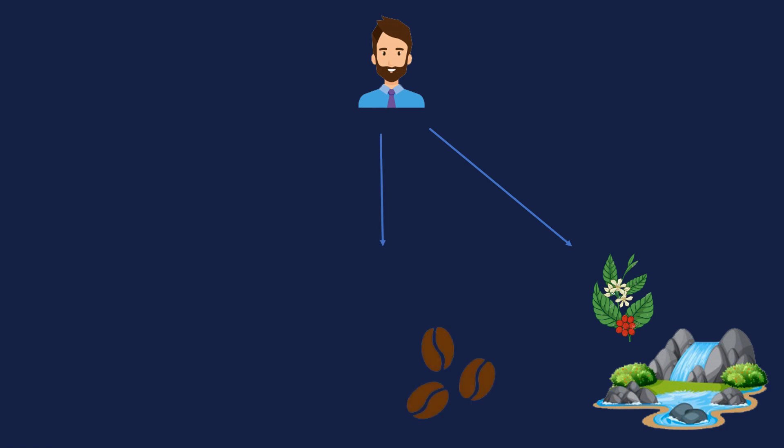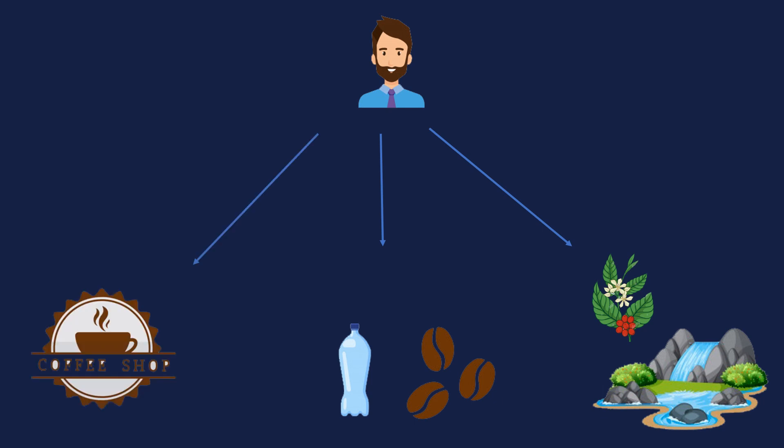The second choice is going to the supermarket to get the beans and a water bottle. Whenever he wants to make coffee, he mixes the coffee beans and water together. In this case he can make coffee any time since the beans and water are already given to him by purchasing them from the supermarket.